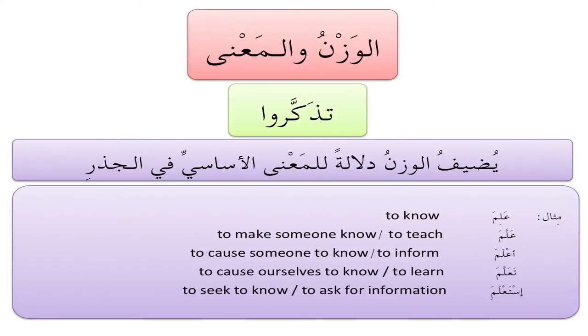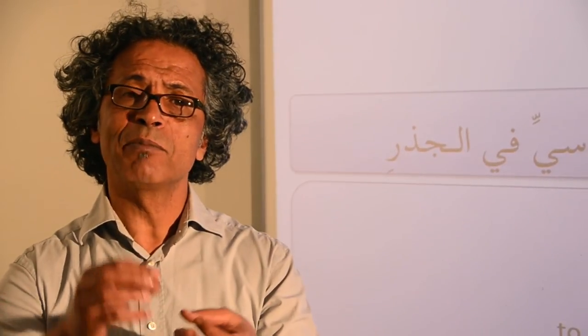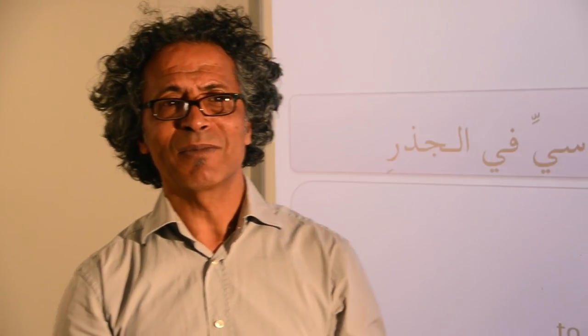عَلِمَ means to know — that's the basic meaning. عَلَّمَ means to make someone know, meaning to teach. أعلَمَ means to cause someone to know, but in this case it's not to teach — it's to inform. تعَلَّمَ means to cause ourselves to know, يعني to learn. واستعلَمَ means to seek to know, or to ask for information. You see how each of these patterns combined with the same root adds a different denotation and a different layer of meaning. شكراً لكم، ونلتقي في الدرس القادم إن شاء الله.